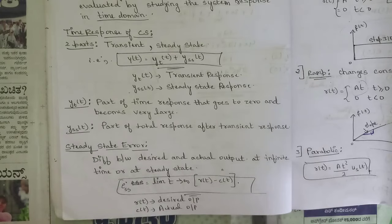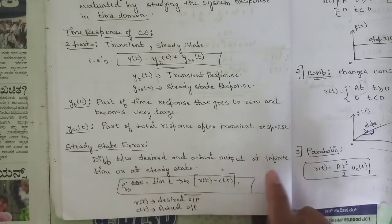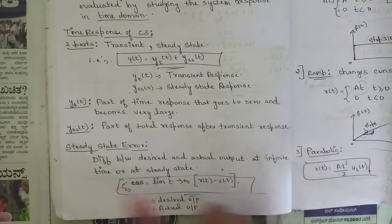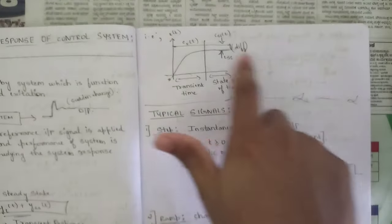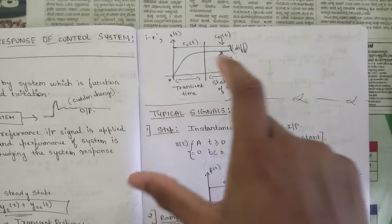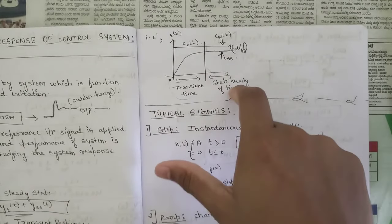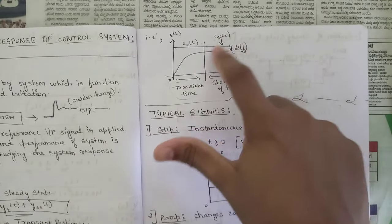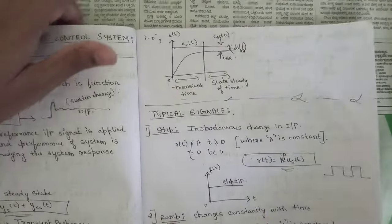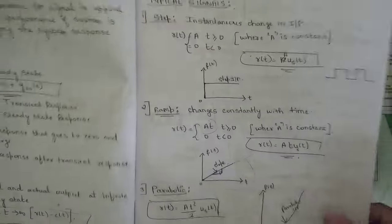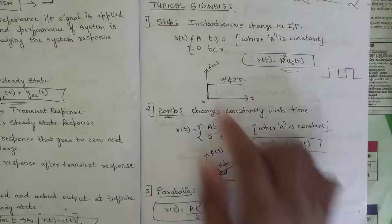The steady state error is the difference between desired and actual output at infinite time, or in steady state. A simple graph has been shown representing transient state and steady state, where the offset at steady state represents the steady state error.